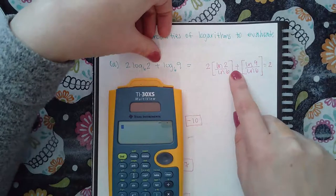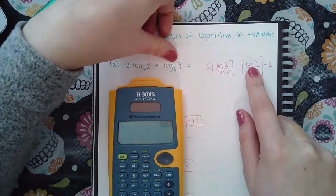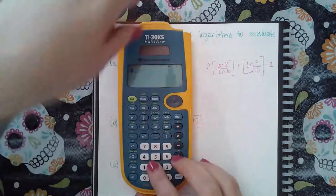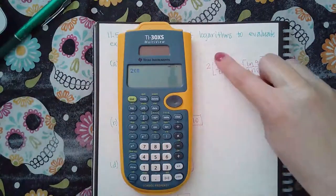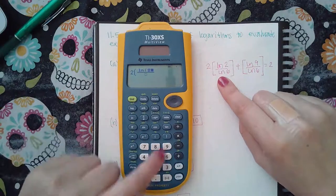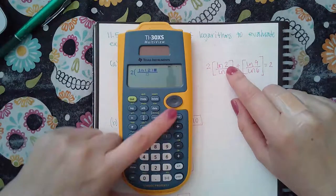Then I put the plus sign. For this logarithm, I changed the base - ln of the argument over ln of the base. I literally typed that in. I put a big parentheses for this giant bracket, then a fraction, then ln of two and closed the parentheses for the argument.